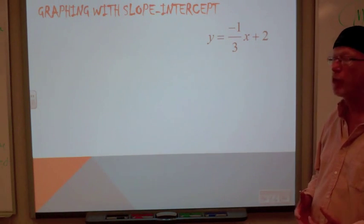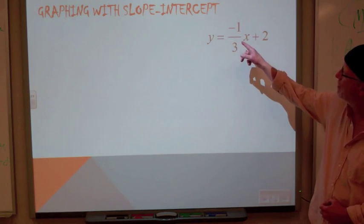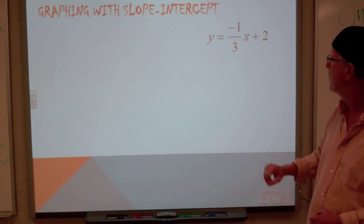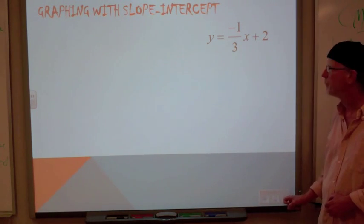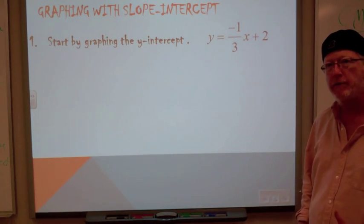Now we're going to look at how do we do a graph with this y-intercept information. We've got our slope of negative one-third. We have a y-intercept of two.